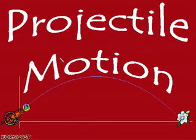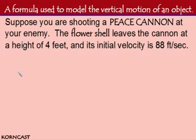In this Korncast, we're going to take a look at projectile motion. We're going to examine a formula used to model the vertical motion of an object. Suppose we're shooting a peace cannon at some unfriendly enemies. The flower shell leaves the cannon at a height of 4 feet, and its initial velocity is 88 feet per second.